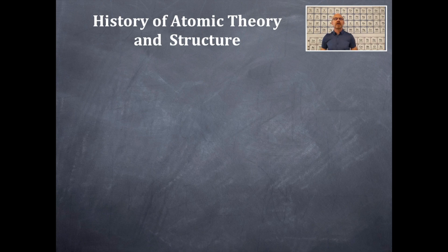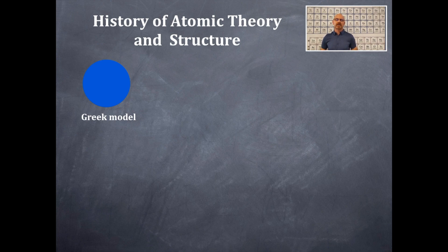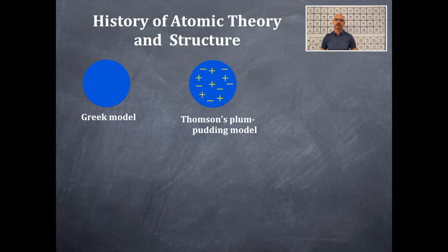The history of atomic structure begins with a Greek model of an atom, which basically meant that you couldn't divide it any further. You take something like a brick and hit it with a hammer multiple times until you can't break that little tiny thing any further — divide it in half, divide it in half, and then you can't divide it in half anymore. That is the Greek model.